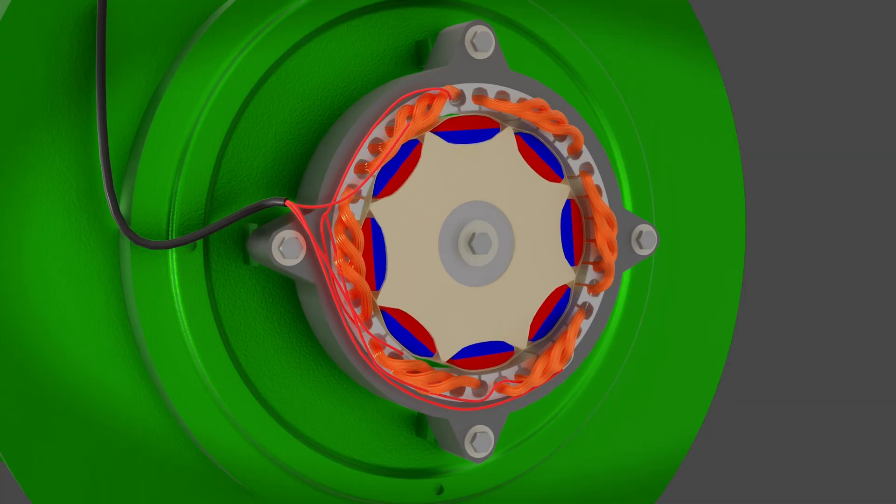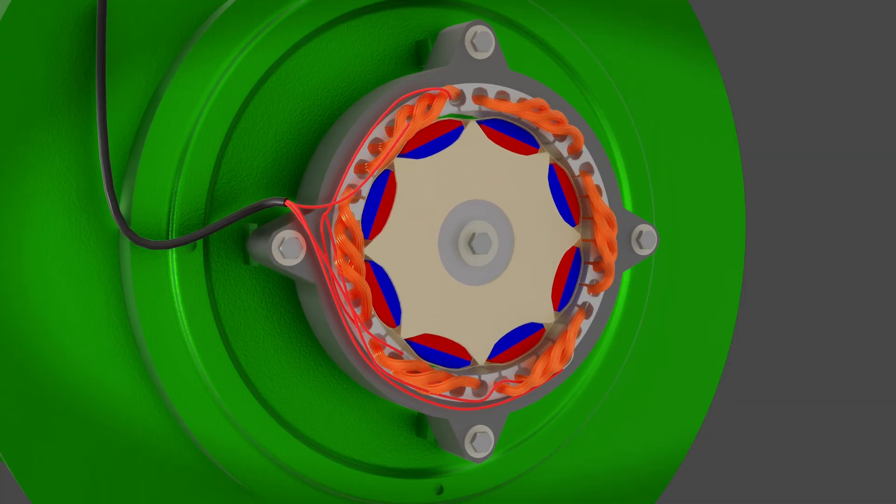As the rotor rotates, the moving permanent magnets cut through the PMG stator windings, generating clean three-phase AC electricity.